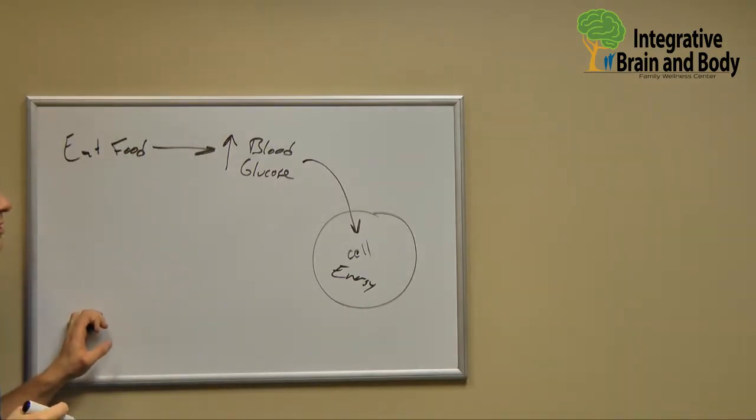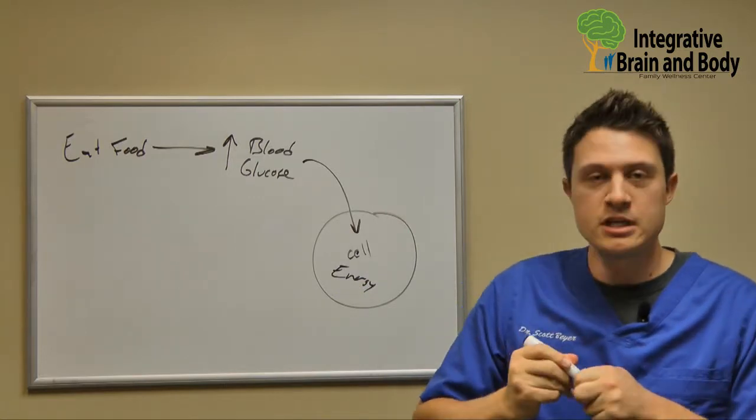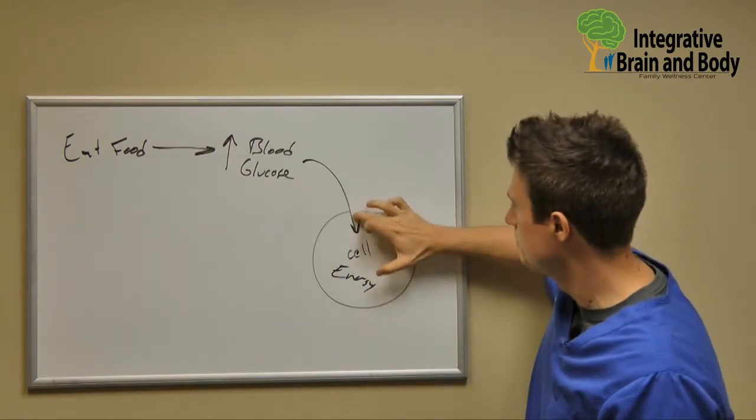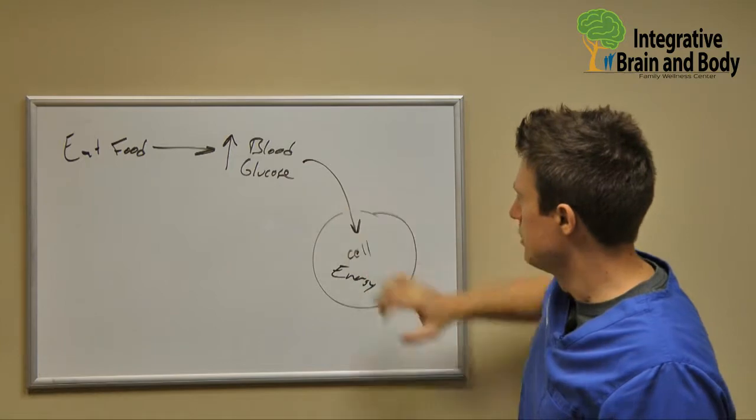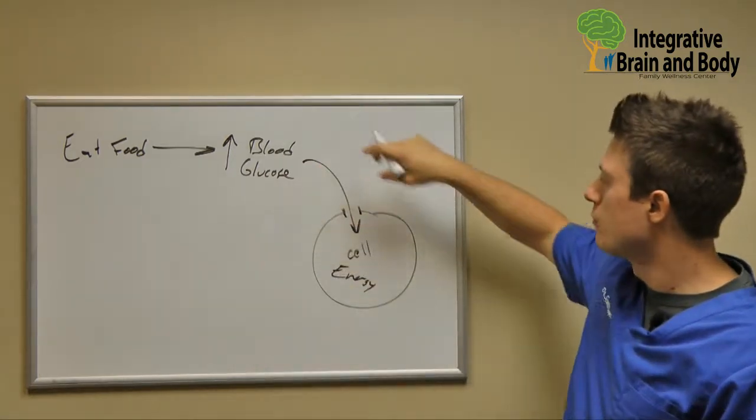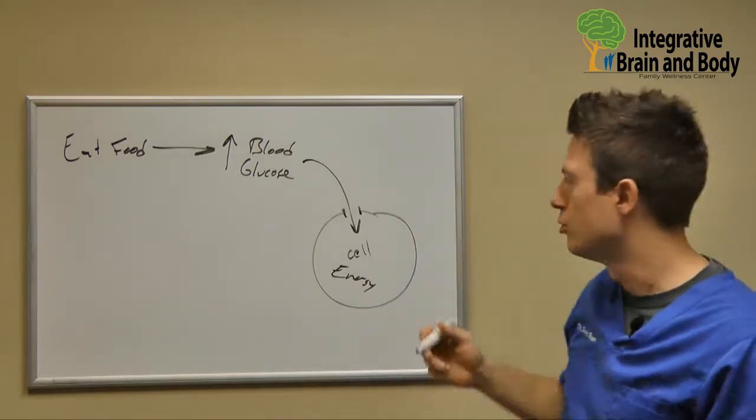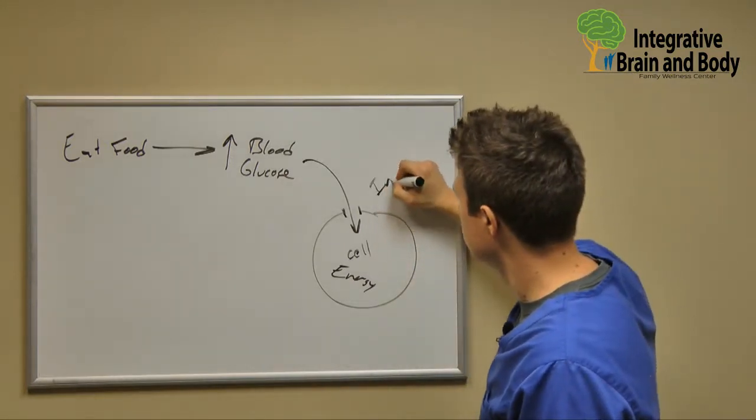Now there is a signaling molecule that helps do that. And this signaling molecule, what it does is it will open the door to allow for glucose to get inside of the cell. Now, what is this signaling molecule? Well, that signaling molecule is insulin.